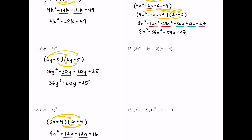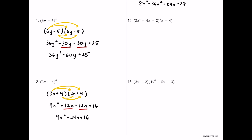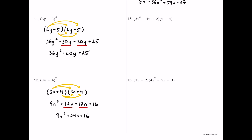For number fifteen, we have a trinomial multiplied by a binomial. Starting with 3x squared: 3x squared times x is 3x cubed. Then 3x squared times positive 4 is positive 12x squared. Moving to 4x: 4x times x is plus 4x squared. Then 4x times positive 4 is positive 16x.